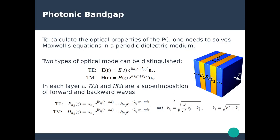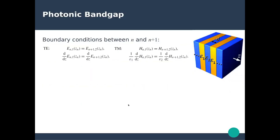Here kz and k-parallel are the longitudinal and parallel wave numbers. To determine the coefficients a and b we need to apply the boundary conditions between the different layers. Looking at the boundary condition between layer n and consecutive layer n+1, for the TE mode we have continuity of the longitudinal component of the electric field and the longitudinal component of the magnetic field, where the derivative terms come from the continuity of the transverse components.